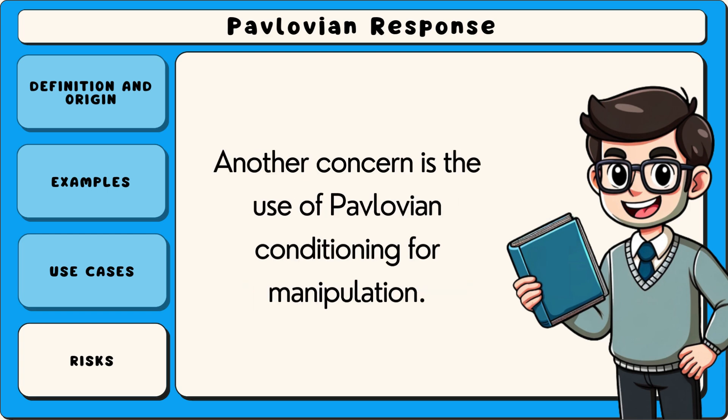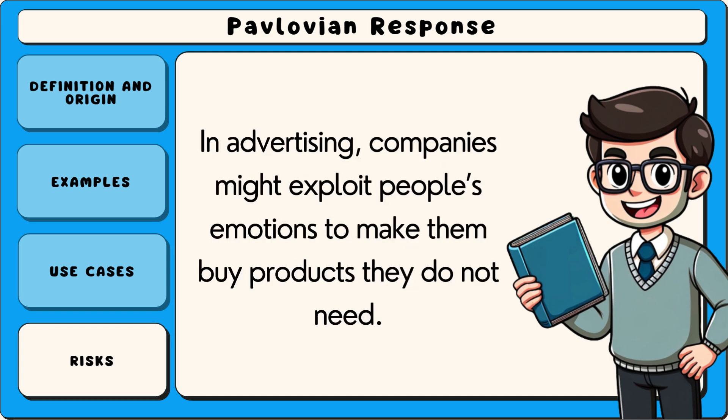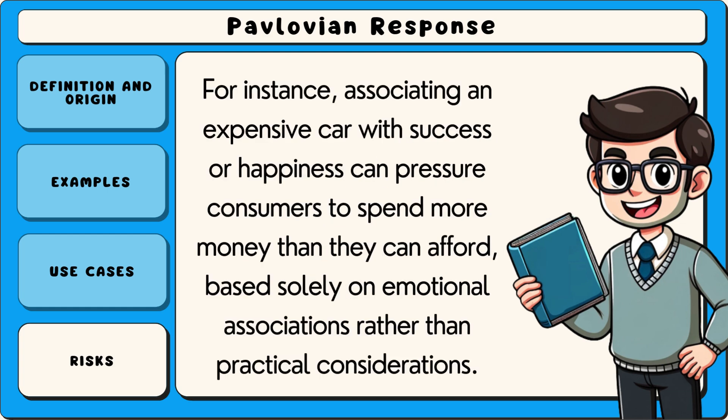Another concern is the use of Pavlovian conditioning for manipulation. In advertising, companies might exploit people's emotions to make them buy products they do not need. For instance, associating an expensive car with success or happiness can pressure consumers to spend more money than they can afford, based solely on emotional associations rather than practical considerations.